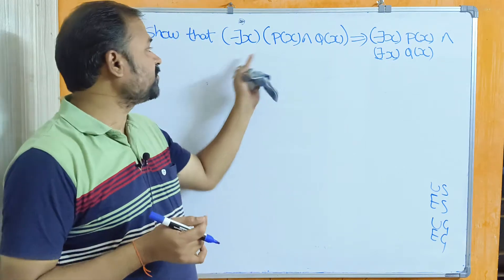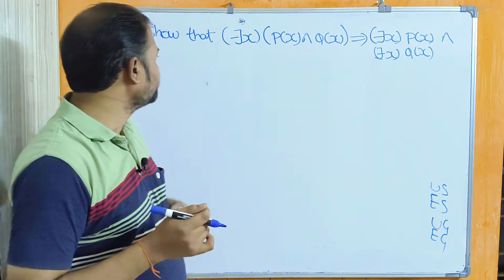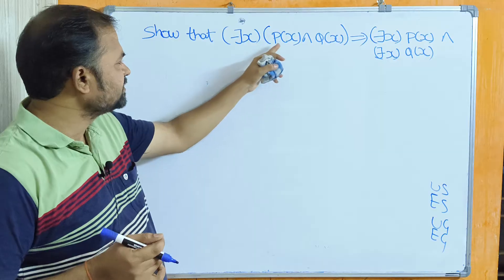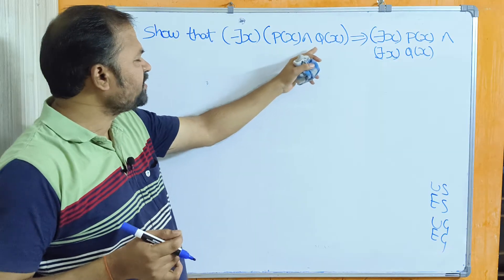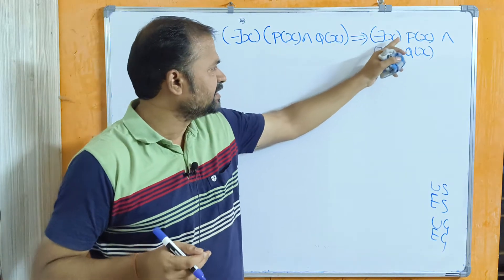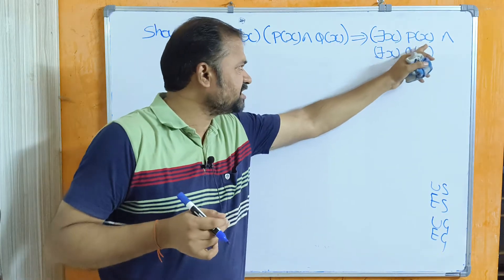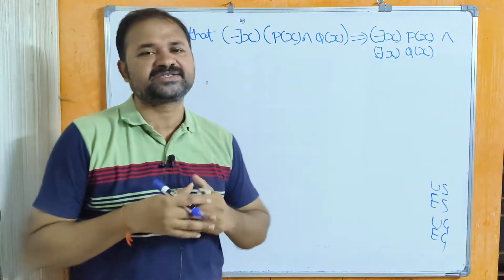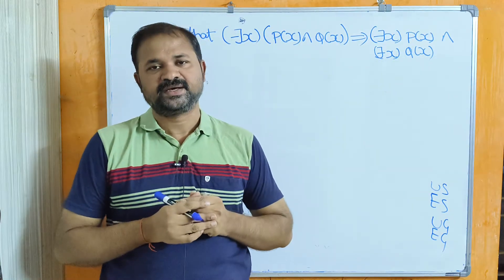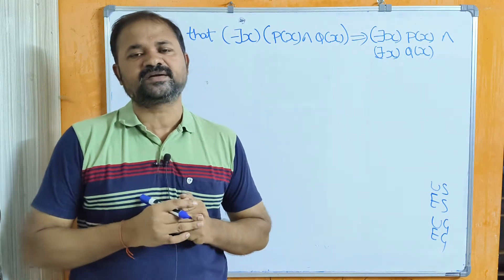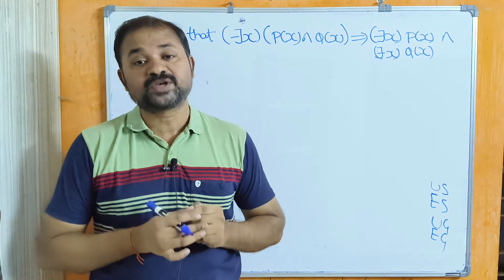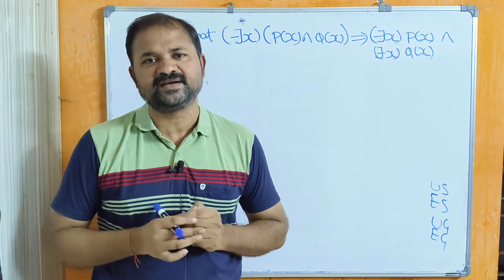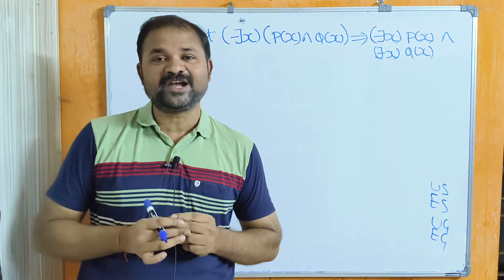Now let us solve this problem. Show that ∃x(P(x) ∧ Q(x)) is equal to ∃xP(x) ∧ ∃xQ(x). This problem comes under rules of inference, that is inference theory for predicate logic.